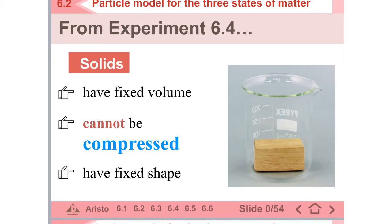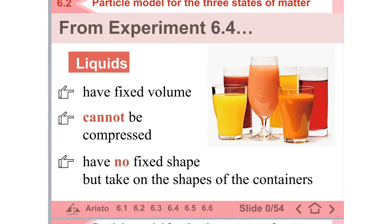Let's have a summary. For solid: it has a fixed volume, it cannot be compressed, it has a fixed shape. For liquids: they have a fixed volume, they cannot be compressed, they have no fixed shape but take on the shapes of their containers.